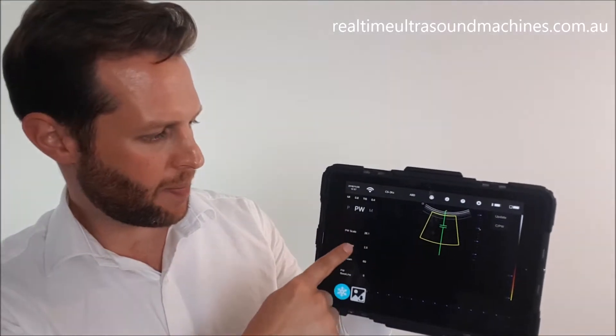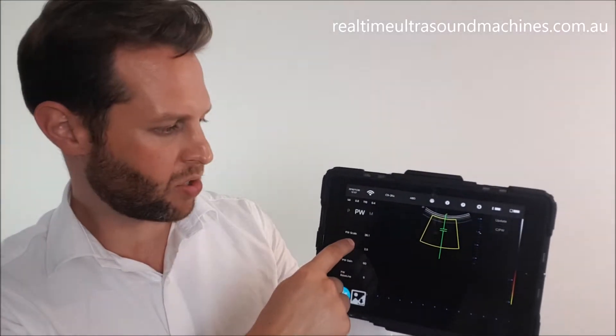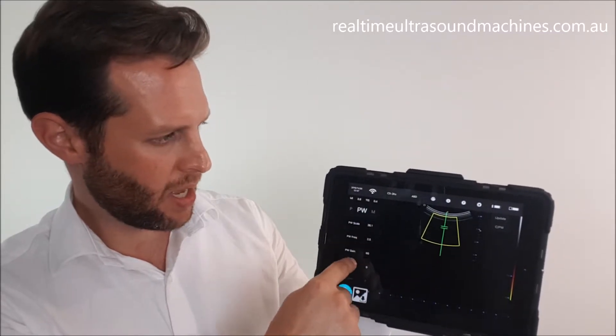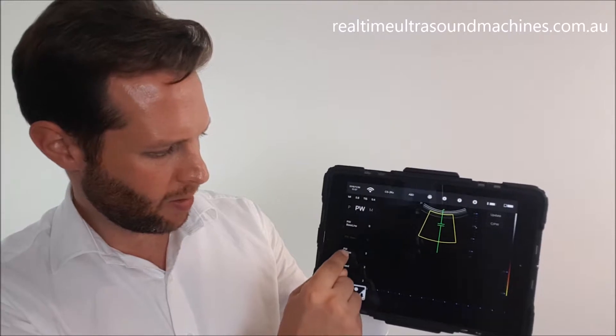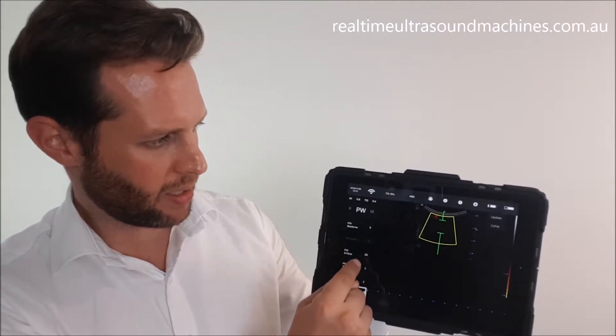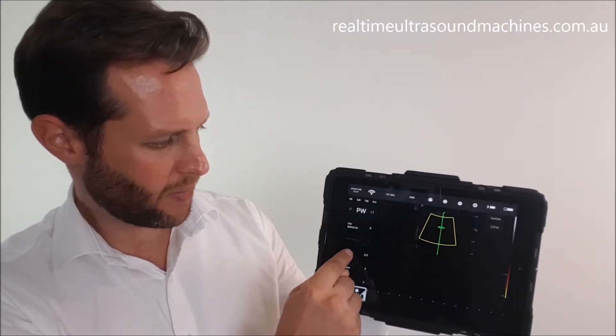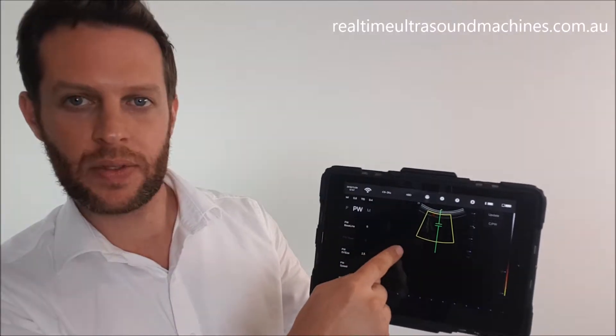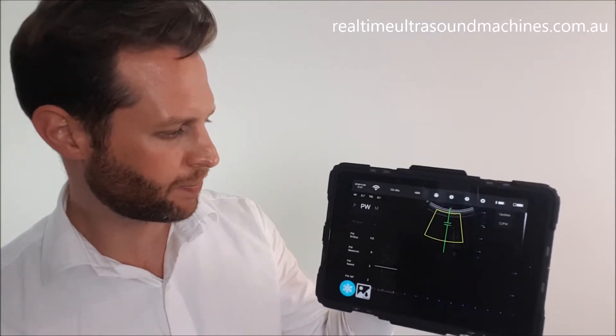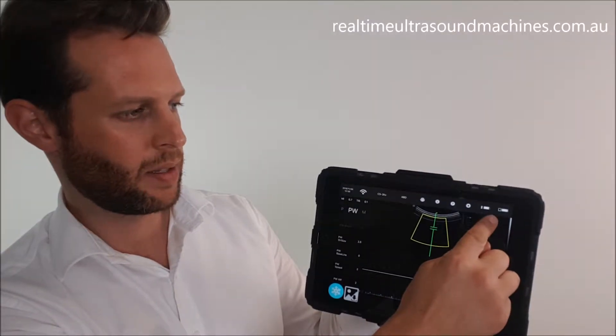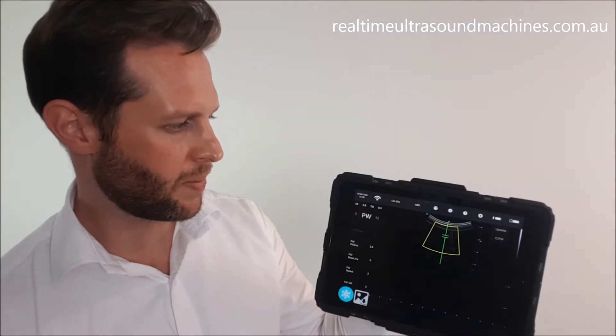Similar to the B menu, you've got all your Doppler optimizations here. For example, if you want to change the size of the sampling gate, you can do that by sliding across with your fingers. Once you're happy with the position of the sampling gate, just hit update and it'll start to sample the Pulse Wave data. When you're finished, hit update again to exit the mode.